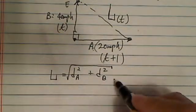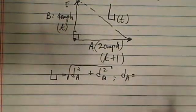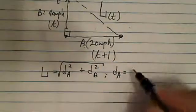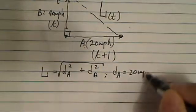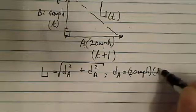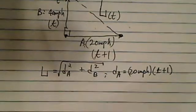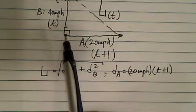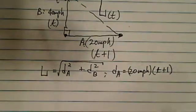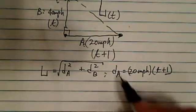And what's the DA then? DA, distance traveled by car A, is 20 miles per hour times T plus 1. So by the time car B passed this point, car A already traveled for an hour. That's why we have a plus 1 here.